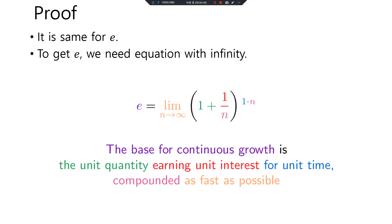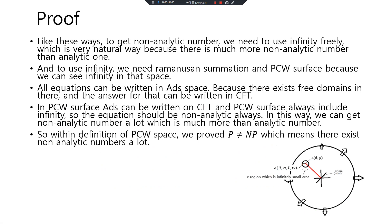To get e, we need an equation with infinity. The base for continuous growth is with the unit quantity earning unit interest for unit time, compounded as fast as possible. By this way, to get non-analytic numbers we need to use infinity freely, which is a very natural way because there are many more non-analytic numbers than analytic ones. And to use infinity, we need Ramanujan summation in PCW surface because we can see infinity in the surface. R equations can be written in ADS space because there exist three domains in there, and the answer for that can be written in CFT. In PCW surface, ADS can be written on CFT and PCW surface always includes C infinity. So the equation should yield non-analytic arrays. In this way, we can obtain many non-analytic numbers, which far outnumber analytic numbers.